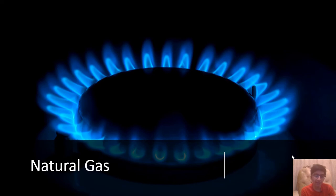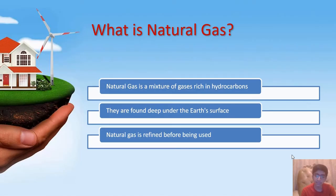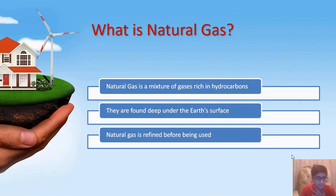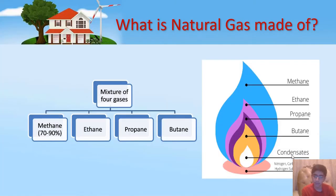Our next topic is natural gas in detail. Natural gas is a mixture of gases that are rich in hydrocarbons. These gases are highly flammable and can easily produce a fire. Natural gas is found deep under the earth's surface and needs to be refined before it is used. It is a mixture of mainly four gases: methane, ethane, propane, and butane. It also contains small amounts of other gases, but those are very minor.